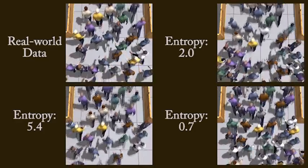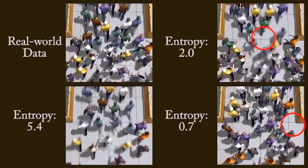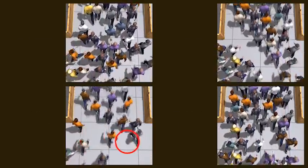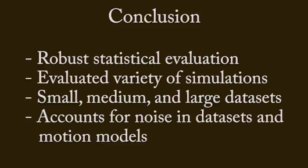Here we show all the simulations side by side with the data and highlight several areas of difference. In conclusion, we have presented a method for robust statistical evaluation of crowd simulations against real-world data. Our method can be applied to many different types of simulations and data, and works equally well with both large-scale and small-scale simulations. Additionally, our method accounts for potential noise in the dataset and uncertainty in the models of human motion. For more details, see the accompanying paper.